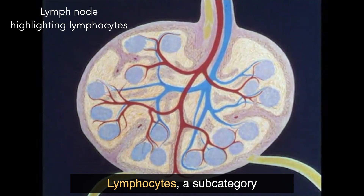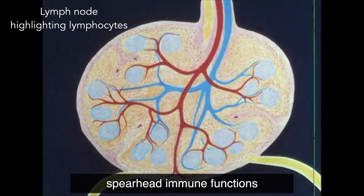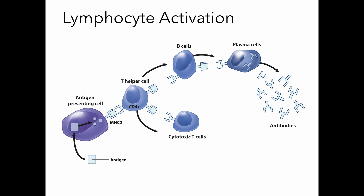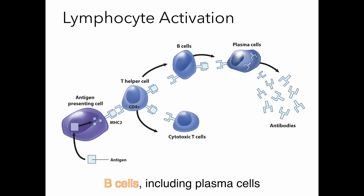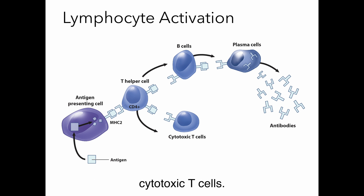Lymphocytes, a subcategory of white blood cells, spearhead immune functions in the body, whether based in humoral or cellular immunity. Humoral immunity occurs with B cells, including plasma cells and memory B cells, whereas cellular immunity occurs with cytotoxic T cells.